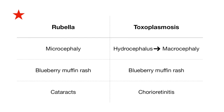On this slide there is a red star indicating similarities between infections that I want you to keep in mind. Comparing rubella and toxoplasmosis: with toxoplasmosis, babies will have hydrocephalus leading to macrocephaly, whereas in rubella, babies will often have microcephaly. In both situations there can be a blueberry muffin rash. Ocular findings in rubella typically present as cataracts, whereas in toxoplasmosis they present as chorioretinitis.